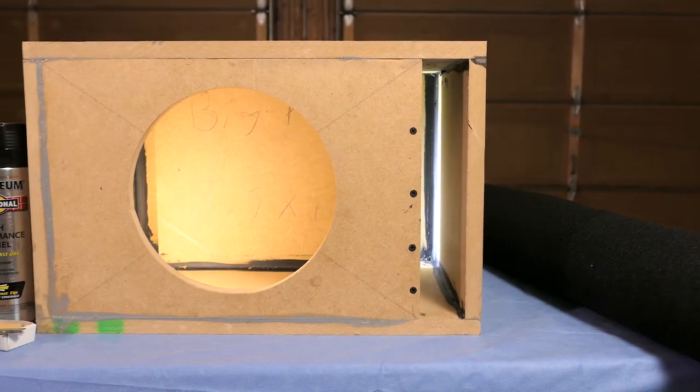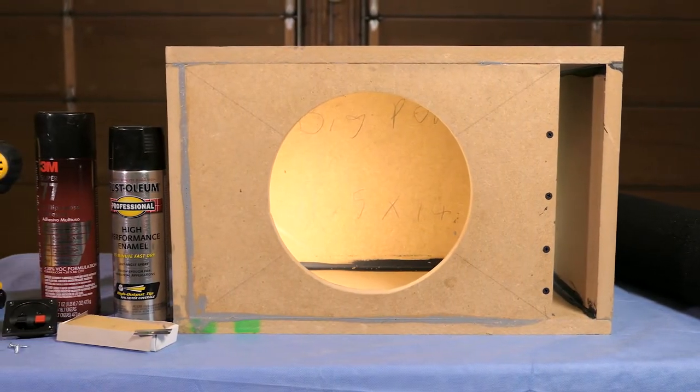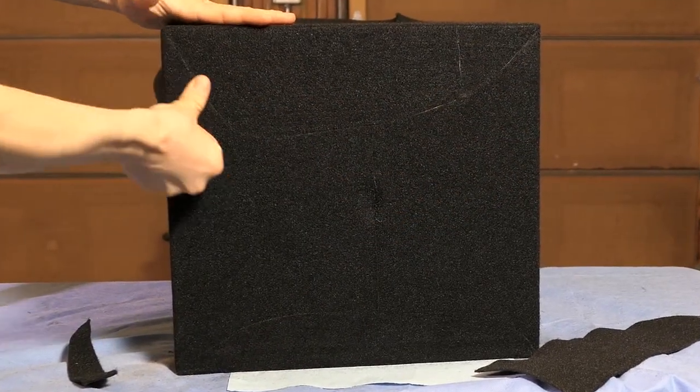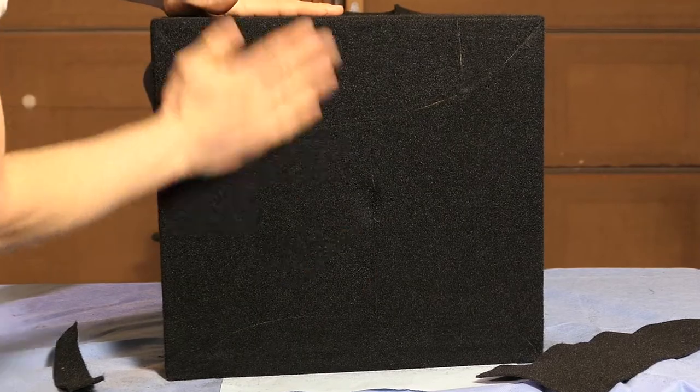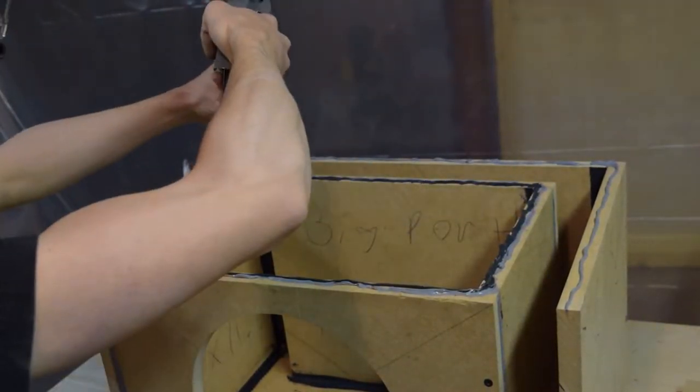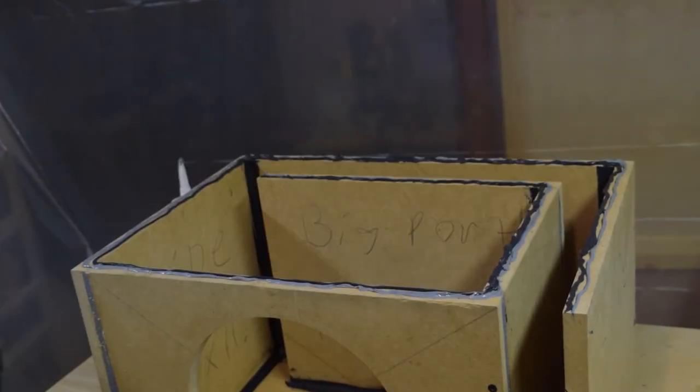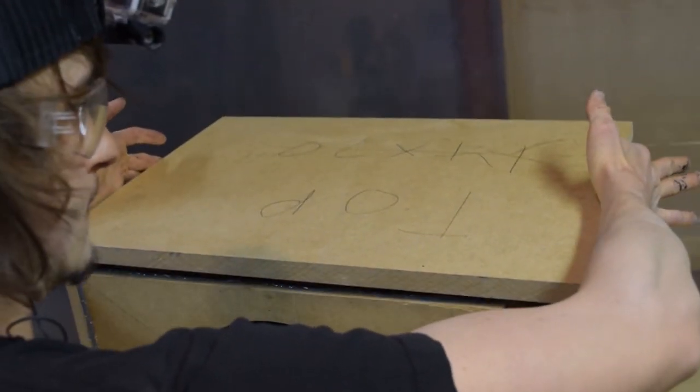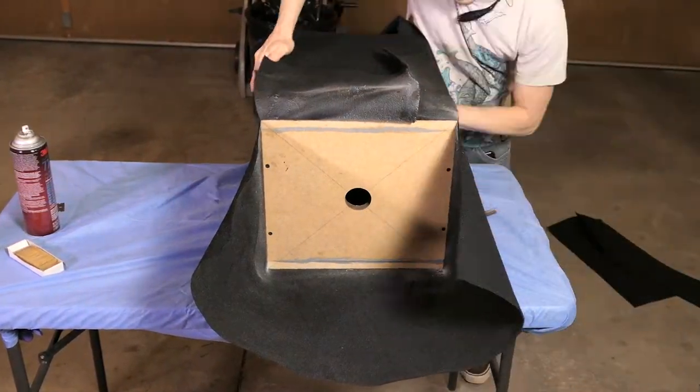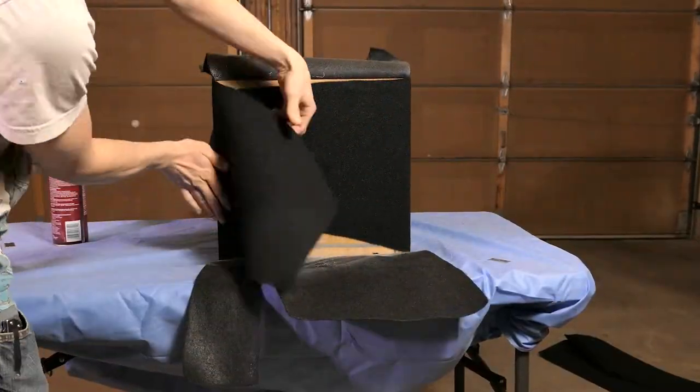This time around I will be using the simple method of sub box carpeting which will have seams on the side when finished. Now there is another method of carpeting that will hide the seams, but this requires the enclosure to be built in a certain way where the side panels are recessed into the box. I may try that on the next build, but the method I'm about to show you is what I have used on all my boxes and it usually turns out pretty darn good.